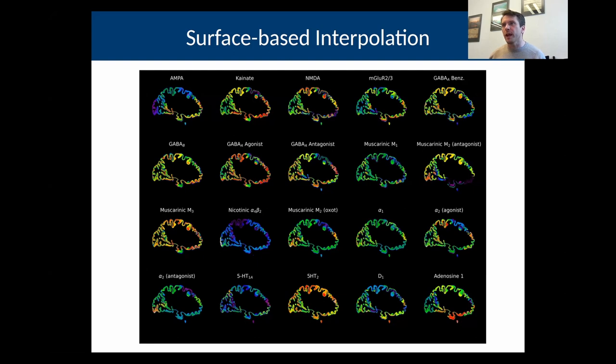Using this approach, you can then produce full 3D maps for the cortex of all of the receptor densities. This not only fills in the gaps between the slabs, but it also does a better job of following the laminar distribution of the receptors through the cortex.